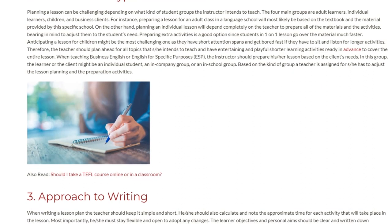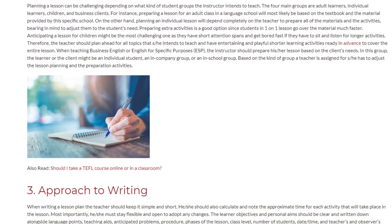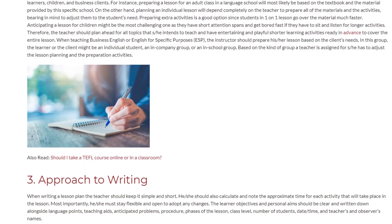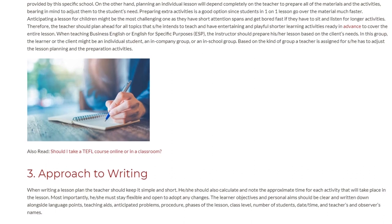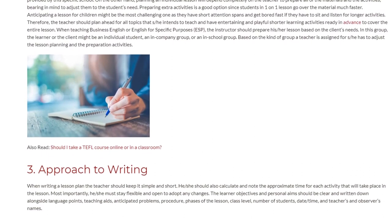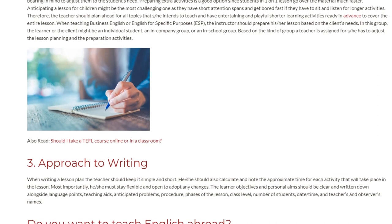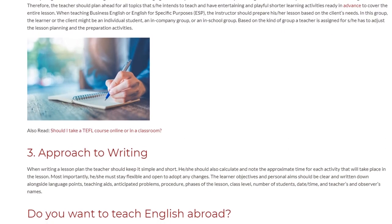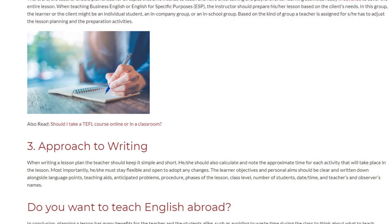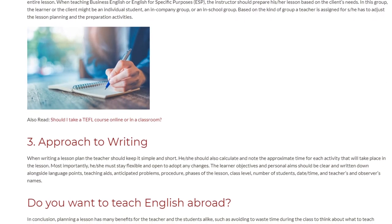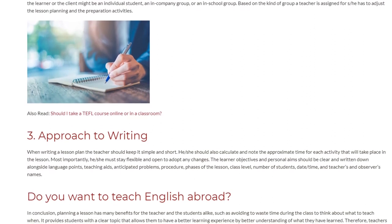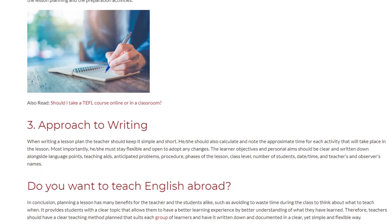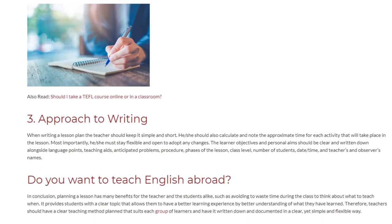The third step is the approach to writing. When writing a lesson plan, the teacher should keep it simple and short. He or she should also calculate and note the approximate time for each activity. Most importantly, he or she must stay flexible and open to adopting any changes. The learner objectives and personal aims should be clear and written down alongside language points, teaching aids, anticipated problems, procedure, phases of the lesson, class level, number of students, date, time, and teacher and observer names.